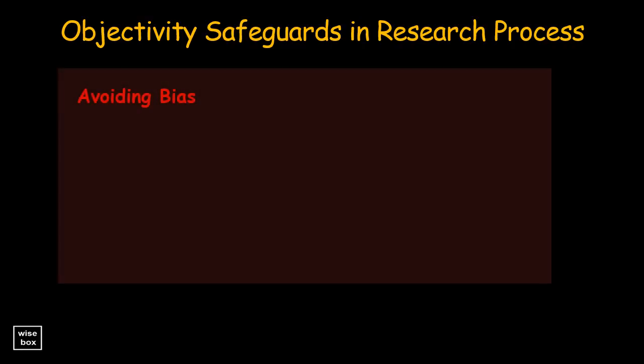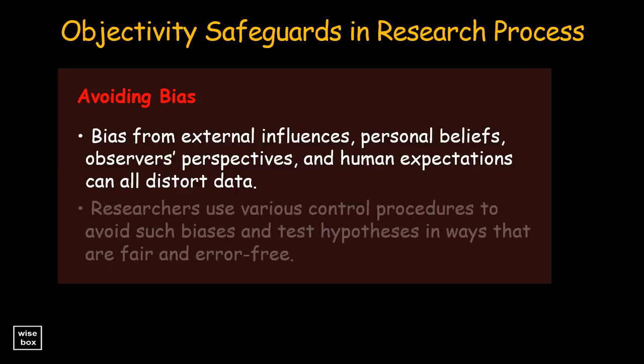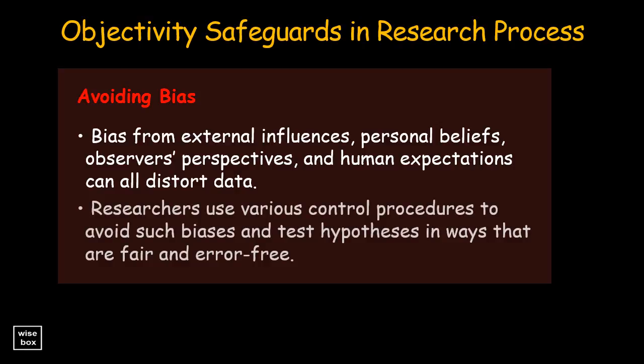Avoiding bias: bias from external influences, personal beliefs, observers' perspectives, and human expectations can all distort data. Researchers use various control procedures to avoid such biases and test hypotheses in ways that are fair and error-free.